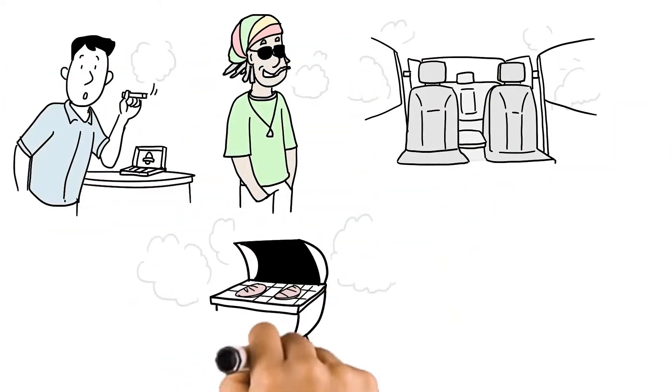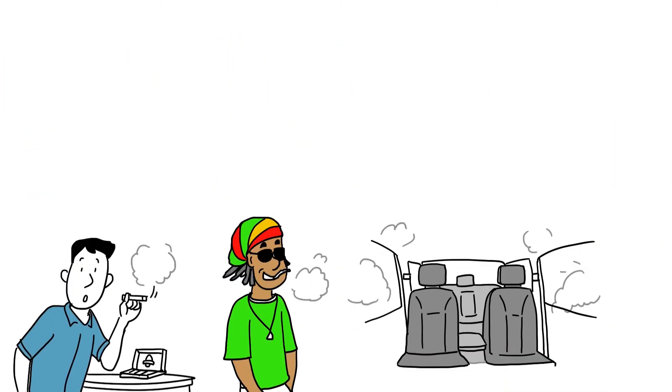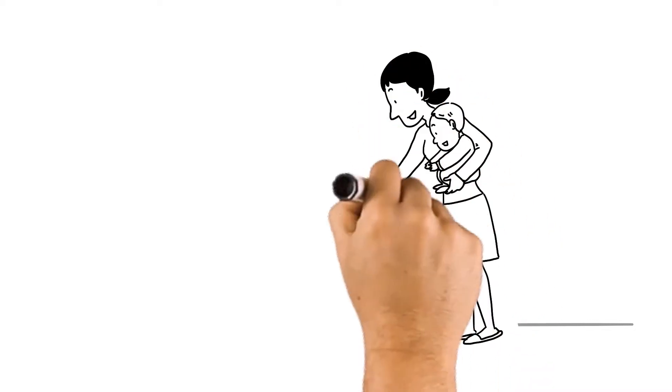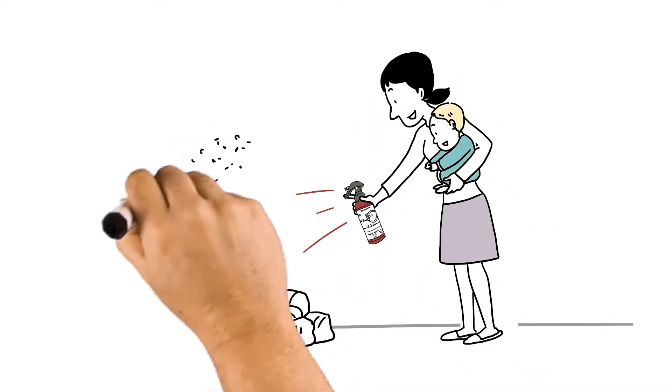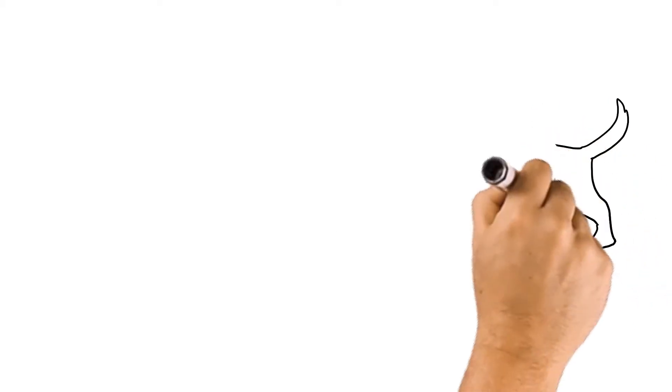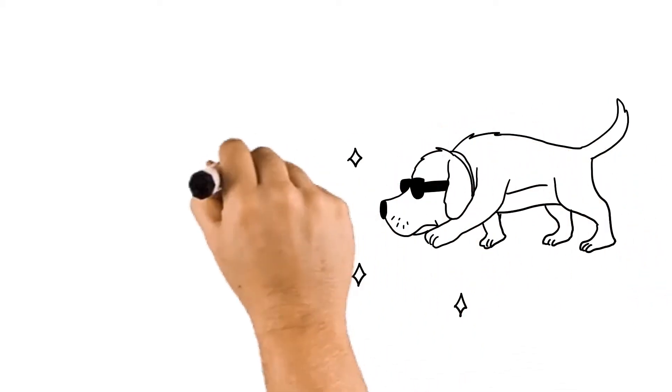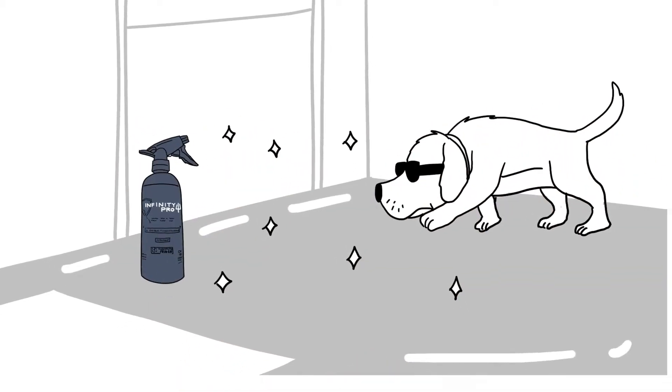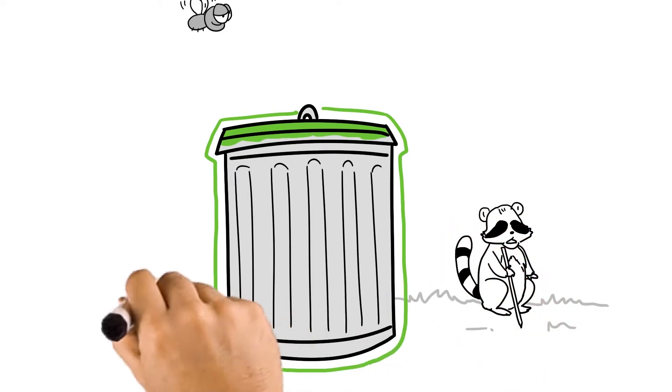Infinity even removes smoke particle odor on contact. So remember, if you forget to empty the diaper pail, just apply Infinity to eliminate the odor. If dogs and cats don't smell where they peed or sprayed, they won't re-mark the spot. And if pests can't smell your garbage cans, they pass on by.